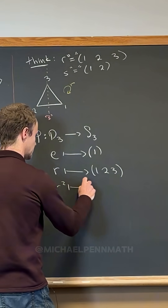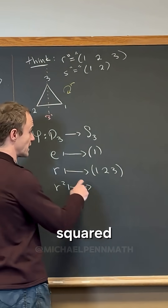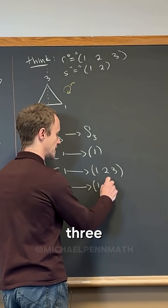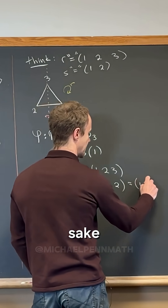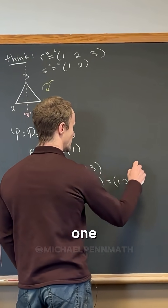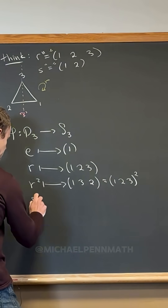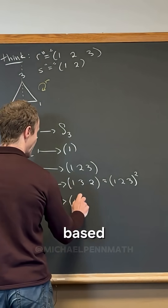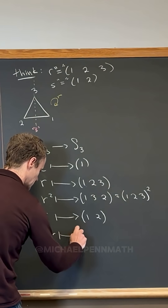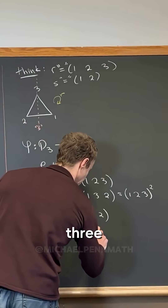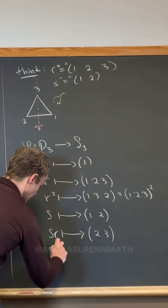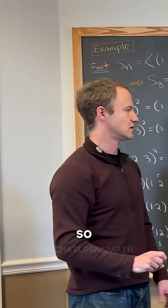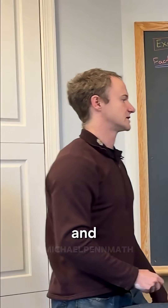And r squared gets sent to (1 2 3) squared, which is (1 3 2), since it has to be sent to this squared by the fact that it's an isomorphism. Then s gets sent to (1 2), and sr gets sent to (2 3). That's the last element — sr squared goes to (1 3), which is the only element of S3 left.